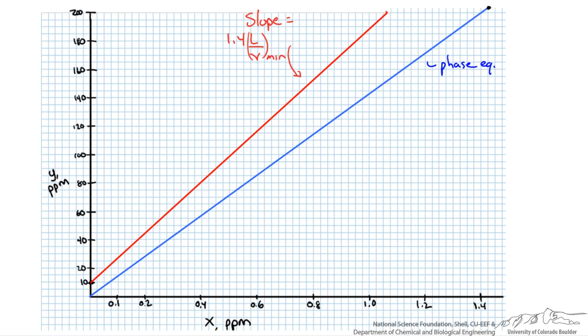So using our ratio of 1.4 to the L over V min, we can plot our actual operating line for our system. We can solve for xn in this case, and see that it is about 1.06. So now that we know our outlet condition, we have our operating line, our phase equilibrium line, and we can start counting our stages.